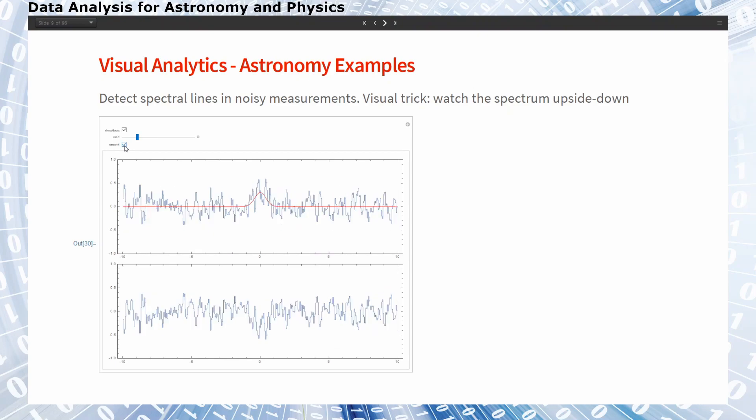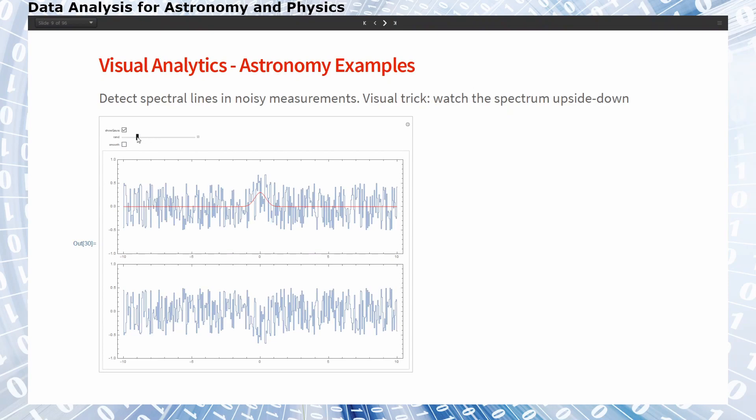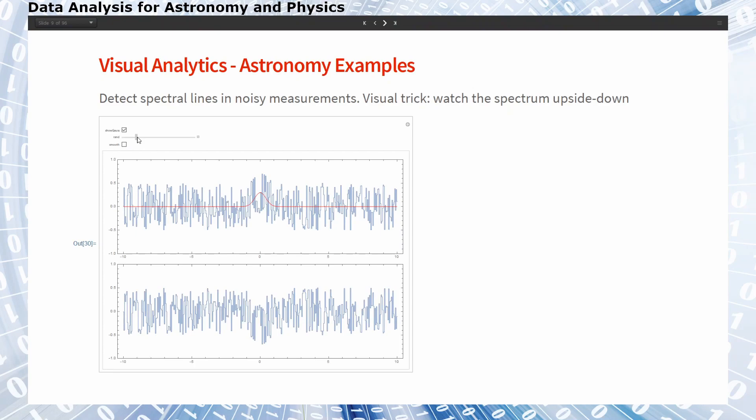You can smooth this then it's more prominent. And if I change the noise which is just generated by a random generator and always we have the same underlying spectral line.